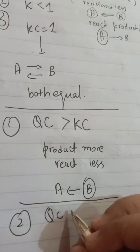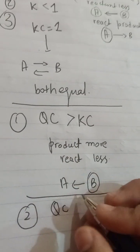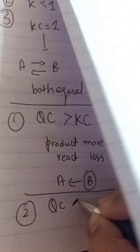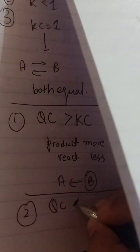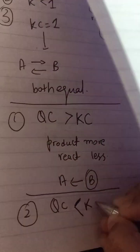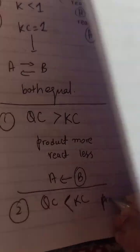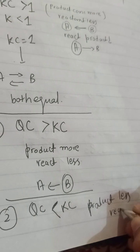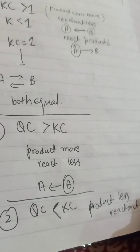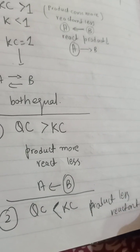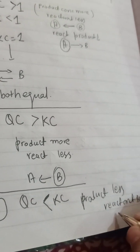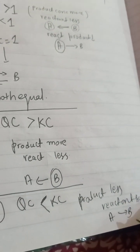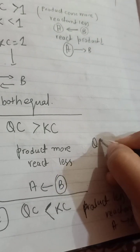Qc is the reaction quotient — the concentration is not yet equal. If Qc is less than Kc, it means product concentration is less and reactant concentration is more, so the reaction will proceed in the forward direction.